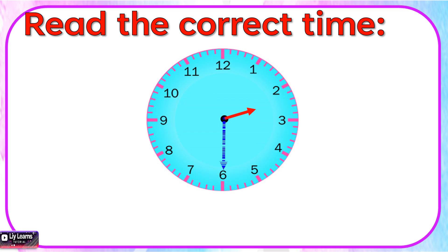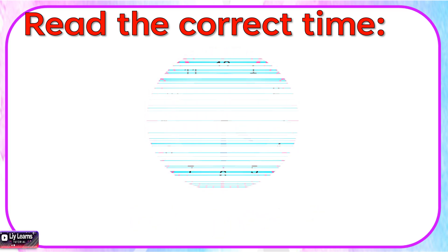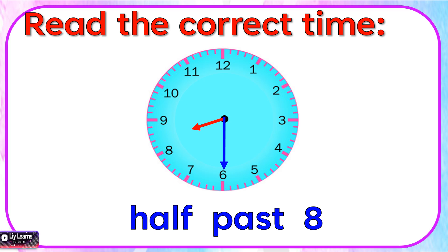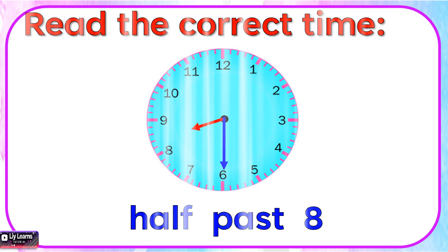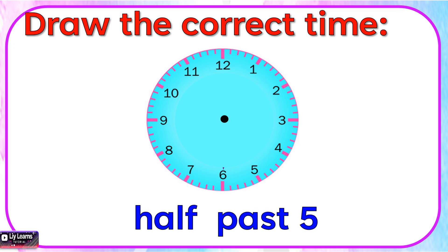Let's read the correct time. We read this as half past 2. The time is half past 8. If it is half past 5, we draw the short hour hand between 5 and 6. The long minute hand is at 6.